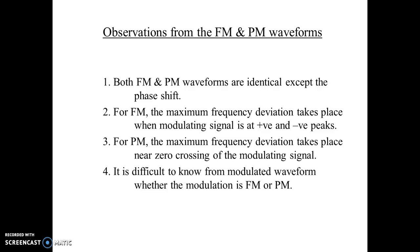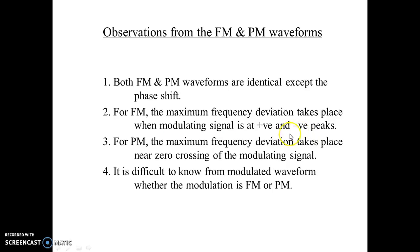Comparing FM and PM waveforms, both are identical except for the phase shift. In PM, there is a phase shift, whereas in FM there is not. For FM, the maximum frequency deviation takes place when the modulating signal is at its positive and negative peaks — meaning when the signal amplitude goes very high or very low, the frequency changes very rapidly.